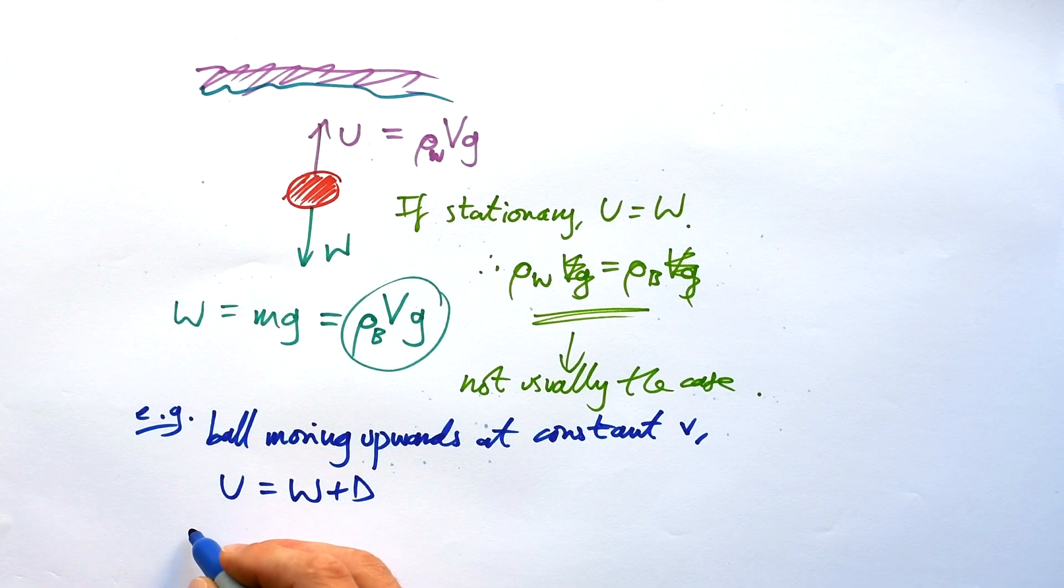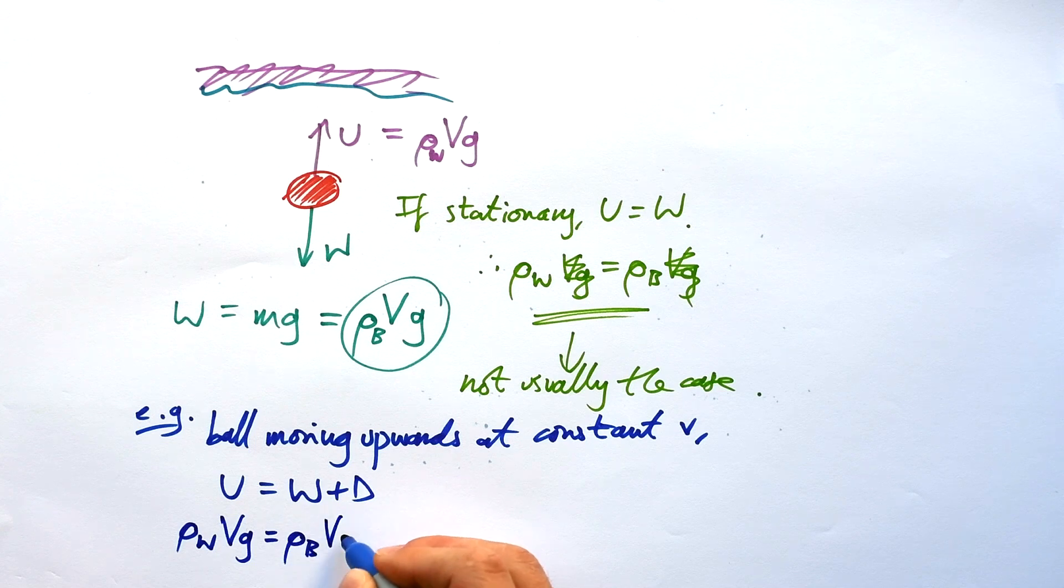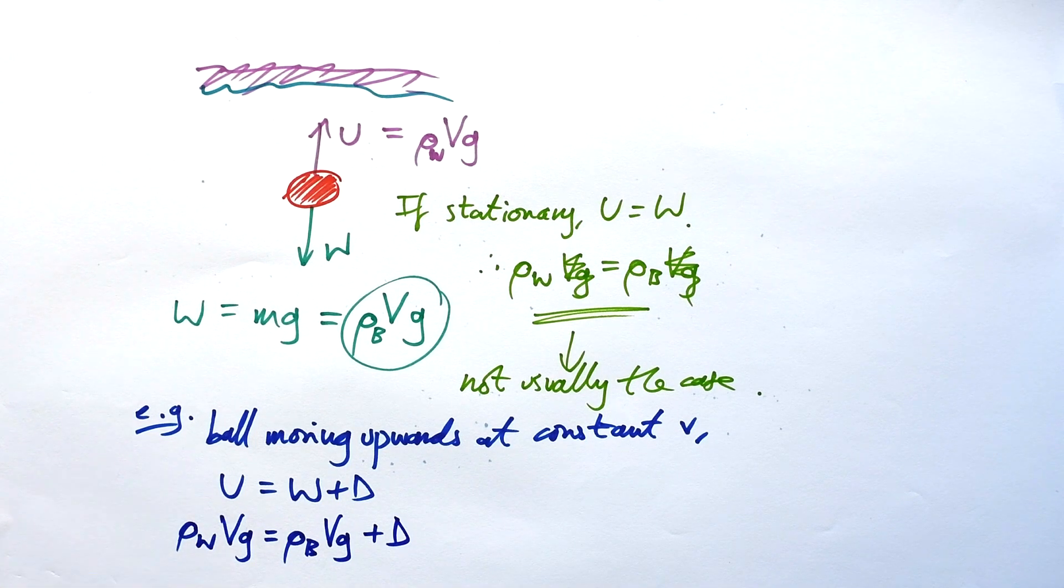What do we know the upthrust to be? We said that's ρ_W Vg, that's equal to ρ_B Vg, that's the weight of the ball, plus the drag.